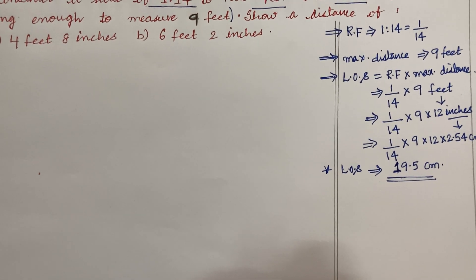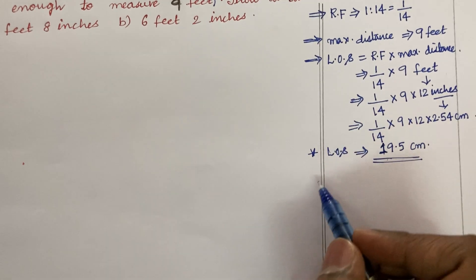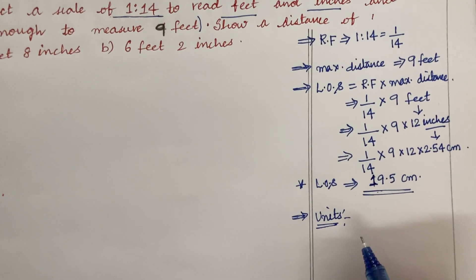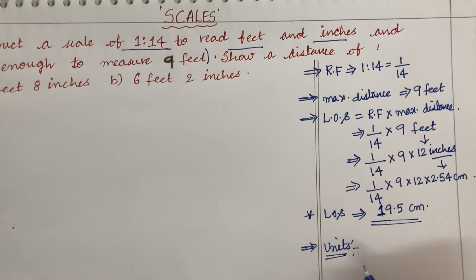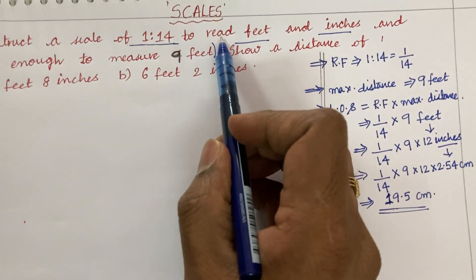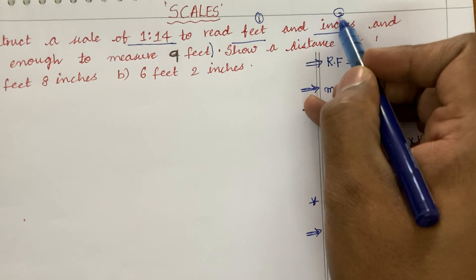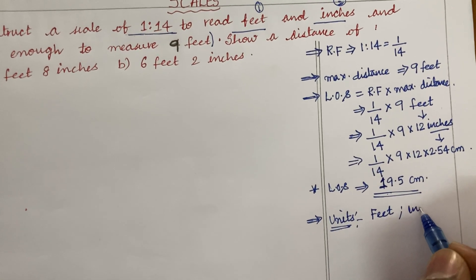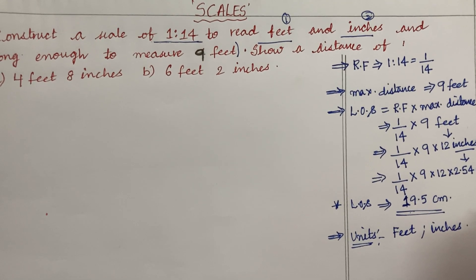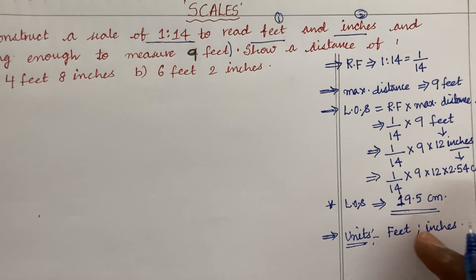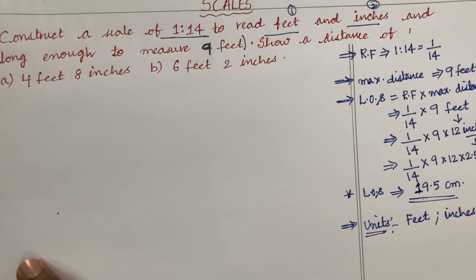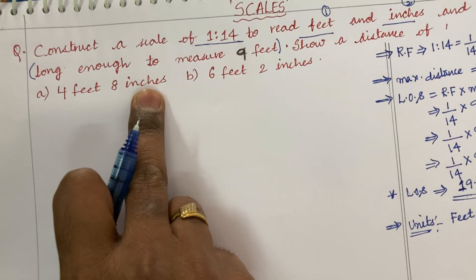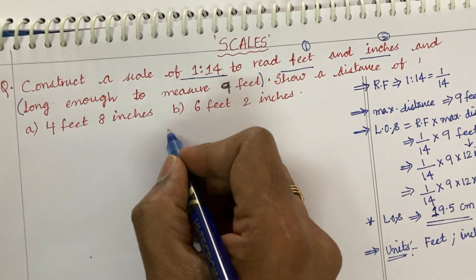Before that, we need to identify which type of scale this belongs to. After working out the length of the scale, we are supposed to work out the different units given in the scale. Once you look at the problem, the scale can read feet — that is one unit — and the other unit is inches. It can read only up to two units: feet and inches. A scale which can read up to two consecutive units is said to be a plain scale. By looking at the marking distance — 4 feet 8 inches — there is no other unit, so the scale is a plain scale.